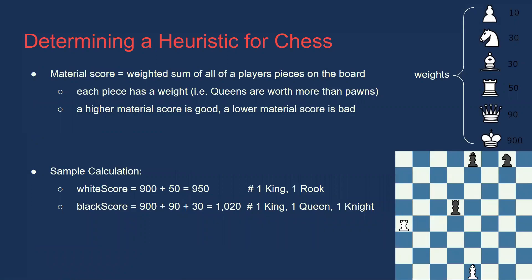Bringing it back to chess. Instead of approximating how good a student is for a university, we want to approximate how good a game state is for a given player. One possibility is material score. In this case, each piece has a weight, and to calculate a player's material score, we consider all of their pieces on the board and sum their weights.